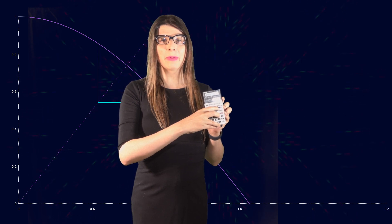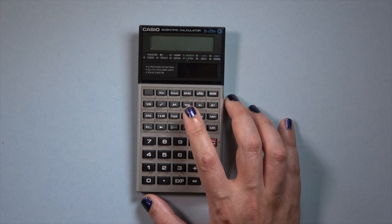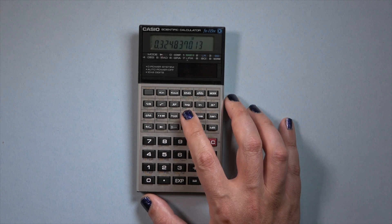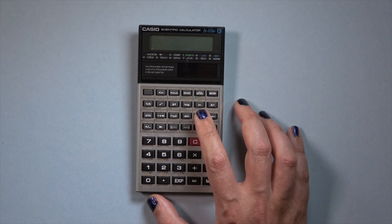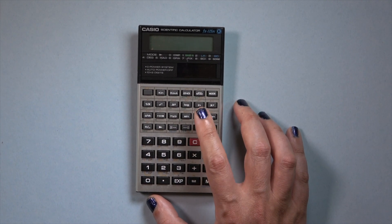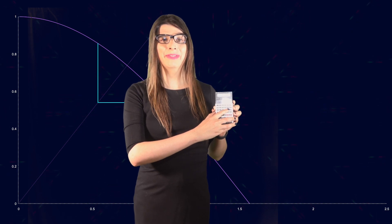Hey everybody, CatSynth TV. Have you ever pressed the same button over and over again on a calculator just to see what happens? Of course you have. When you press sine over and over again, the numbers get smaller and smaller and eventually go to zero. But when you press cosine over and over again, you get to this number. We call this process fixed-point iteration, and this is the topic of today's video.